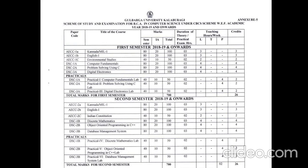There are three computer-related papers: DSC1 — Computer Fundamentals (100 marks), DSC2 — Problem Solving using C (100 marks), and DSC3 — Digital Electronics (100 marks), all with 80 external and 20 internal. In practicals, DSC1, DSC2, and DSC3 practical papers cover Computer Fundamentals, Problem Solving using C, and Digital Electronics respectively, each for 50 marks (40 external, 10 internal). Total first semester marks are 700 and 26 credit points.